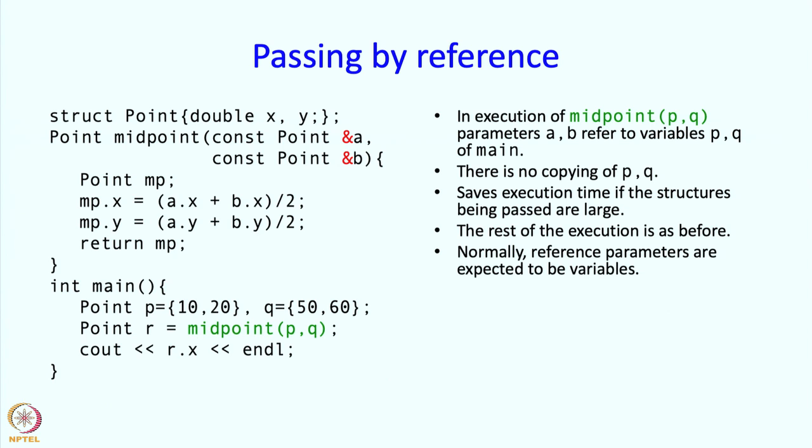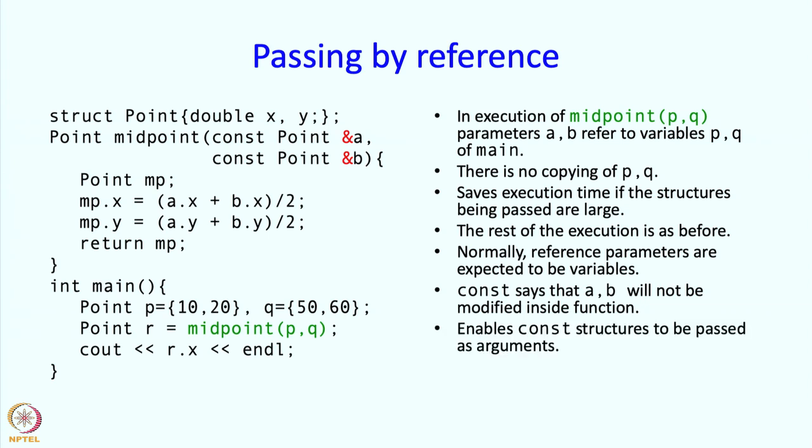The rest of the execution is as before. And normally, if I have a reference parameter, I have that because I want to modify it and therefore, it is expected that the reference parameters should be variables. So whatever is being called over here should be variables because only then can I modify them, modify these reference parameters in the code. However, this const says that this code promises not to modify these things, these parameters. And therefore, with this const you can pass constant points as arguments to midpoint as well. Constant structures can be passed as arguments.